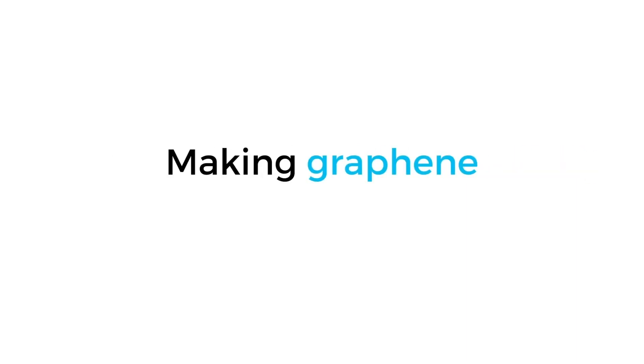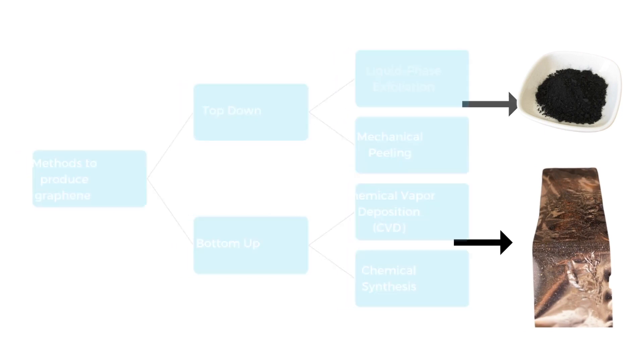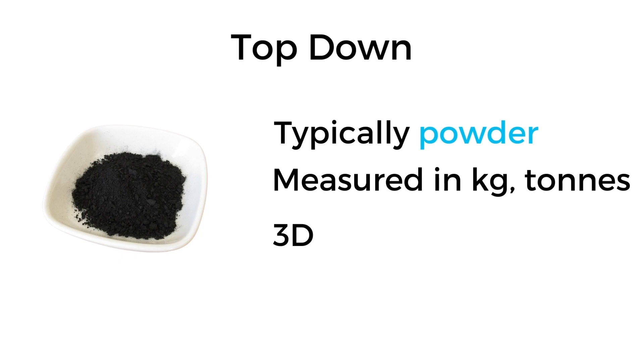Now that you know what graphene is and how it was first isolated, let's talk a little about how it is made. Graphene and its derivatives can be made using top-down or bottom-up processes. Typically, top-down processes involve the mechanical exfoliation of graphite, and the material generated is usually in the form of a powder which is three-dimensional and can be weighed in grams, kilograms, or tons.